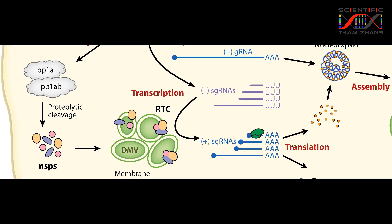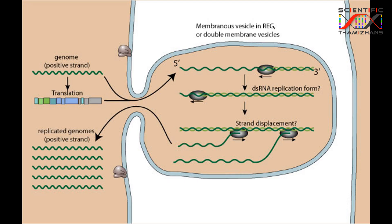If you look at cellular membrane rearrangement, the virus creates structures known as double membrane vesicles. These form the Viral Replication Transcription Complex, which produces subgenomic RNA used to make viral proteins.